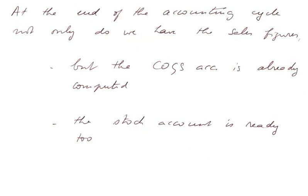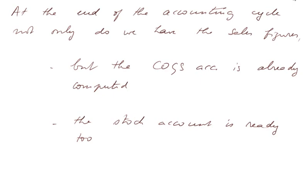So at the end of the accounting cycle, not only do we have the sales figure, of course, but we also have the COGS account that is already computed. And the stock account is ready too. In this alternative, more modern way, we have no more purchases account. No more adjustment for variation inventory from the beginning to the end of the year. And the final legally required inventory is just a check.